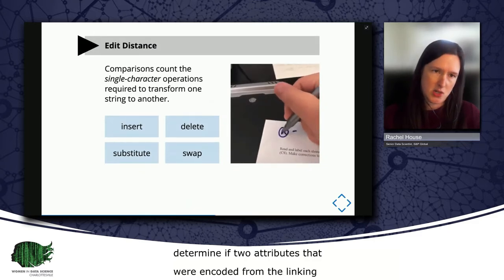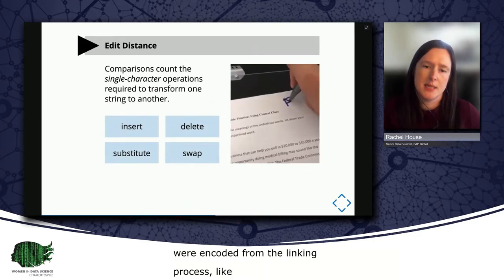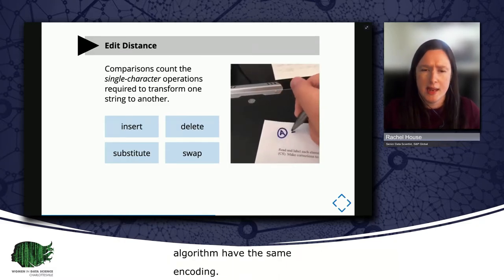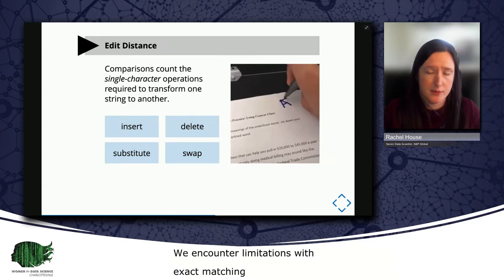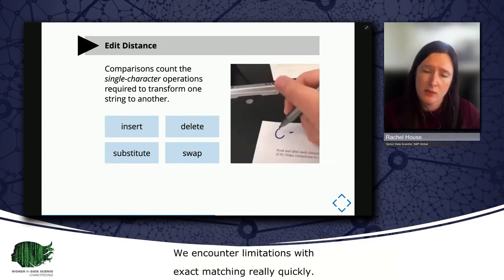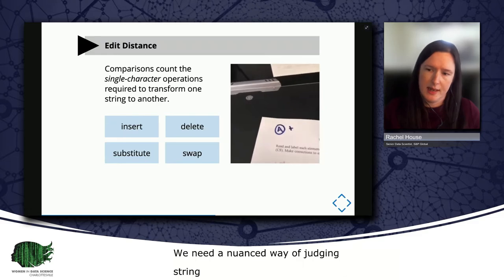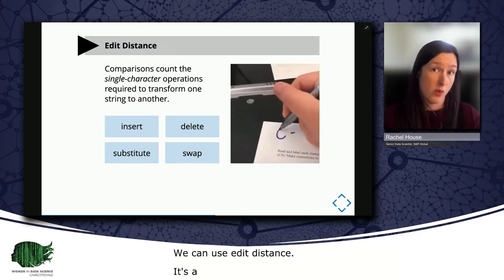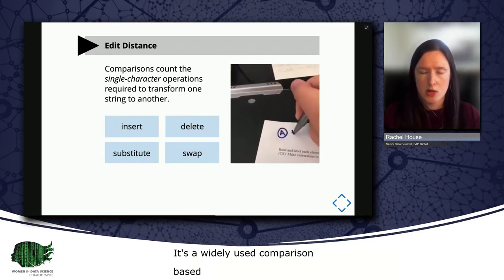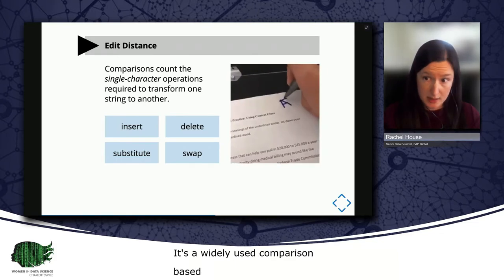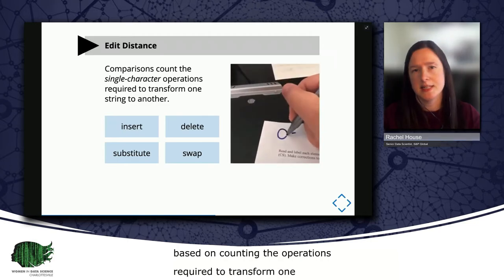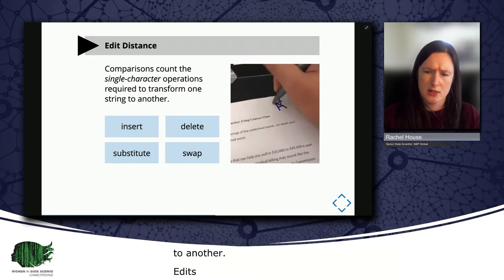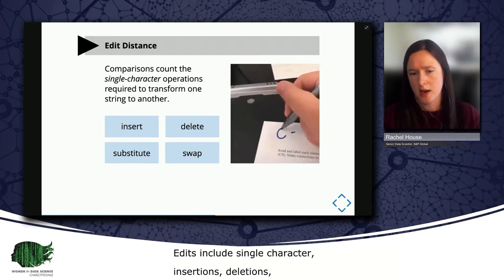As you might imagine, in linking, we encounter limitations with exact matching really quickly. We need a more nuanced way of judging string similarity. And for this, we can use edit distance. Edit distance is a widely used comparison in linking and is based on counting the operations required to transform one string to another. Transformation operations, or edits, include single character insertions, deletions, substitution, and swapping. Different edit distance comparisons use and weight the cost of these operations differently.